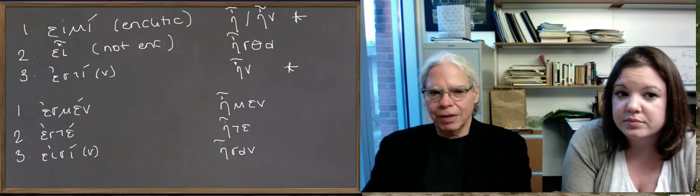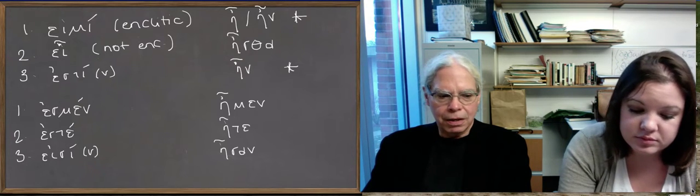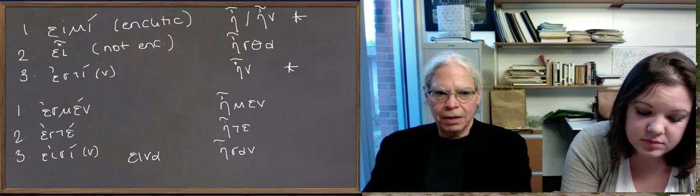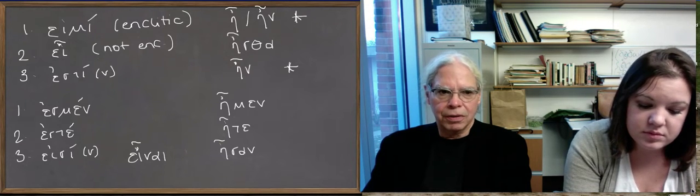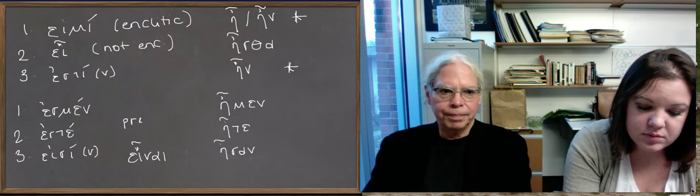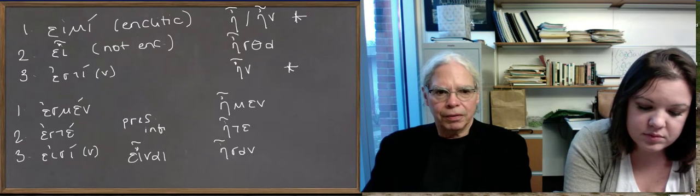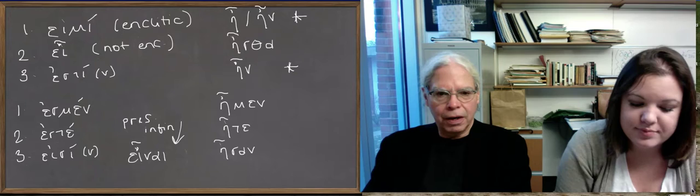So the present infinitive—and there is an aorist infinitive—is εἶναι. It's from ἔσναι, so again the 's' is just appearing in this case and you get the 'ei.' The present optative, we need a new page for this.